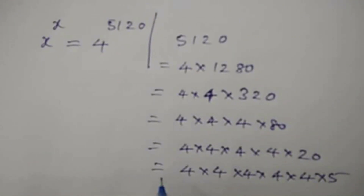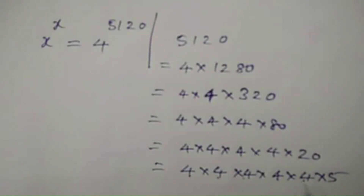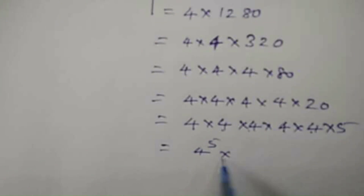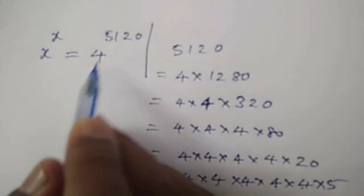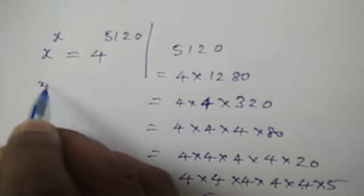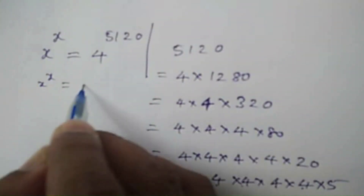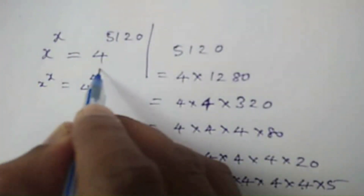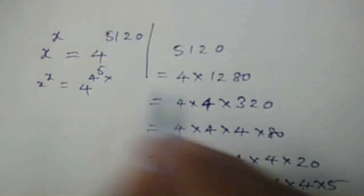Here you can see a total of 5 fours. That is equal to 4 to the power of 5 into 5. So this 4 to the power of 5120 can be written as x to the power of x is equal to 4 to the power of 5 into 5.